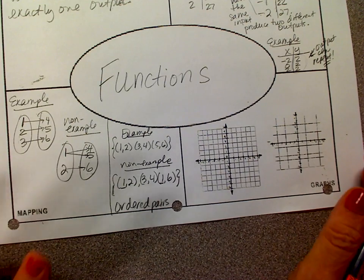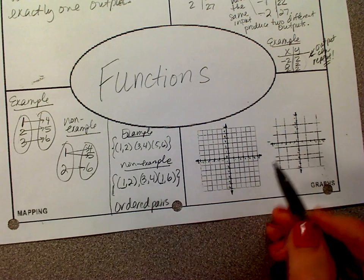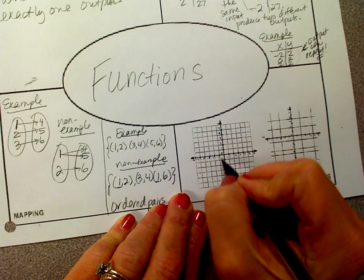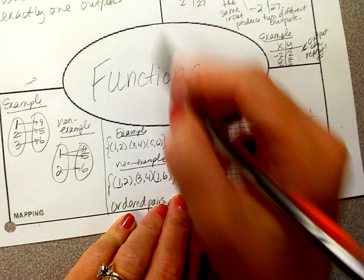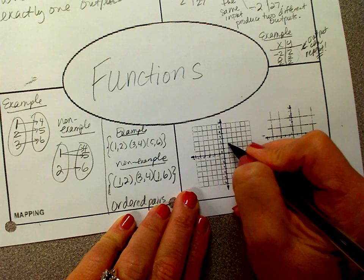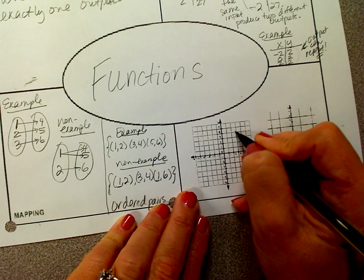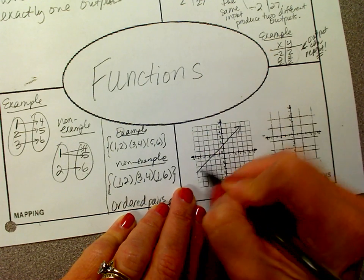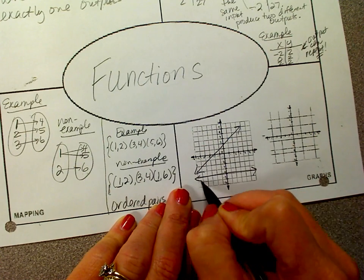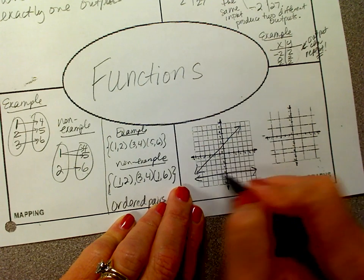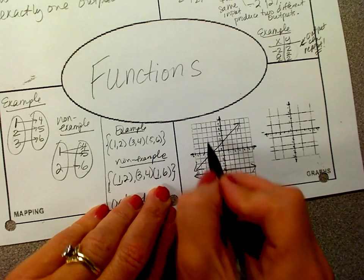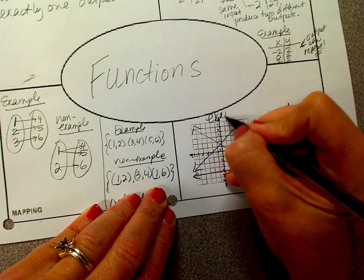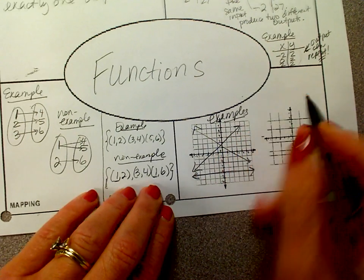Now we're going to look at graphs. Every input has exactly one output. If we plotted any of these example points — like (1, 2), (3, 4) — this can be a function. A horizontal line can be a function. We can have a line going down. These are all examples of functions.